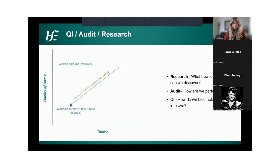How does QI differ from or relate to audit and research? Research gives us what's possible — data collection, theorizing, hypotheses, testing, discovering new knowledge. Audit is a point in time to see how we're doing against indicators, targets, and KPIs. QI is how we can improve from where we are to where we want to go — it's the movement from our current state to where we could be.